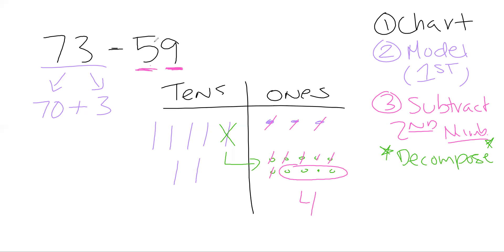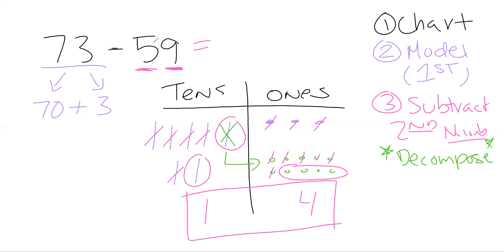Now let's go into the tens place and take 5 away. I already used this one — I don't count that, it's already gone. So: 1, 2, 3, 4, and 5. That leaves me with one left. So I get 14. The counting step comes after we do any decomposing. So there we go — we have a strategy, we know what to do.